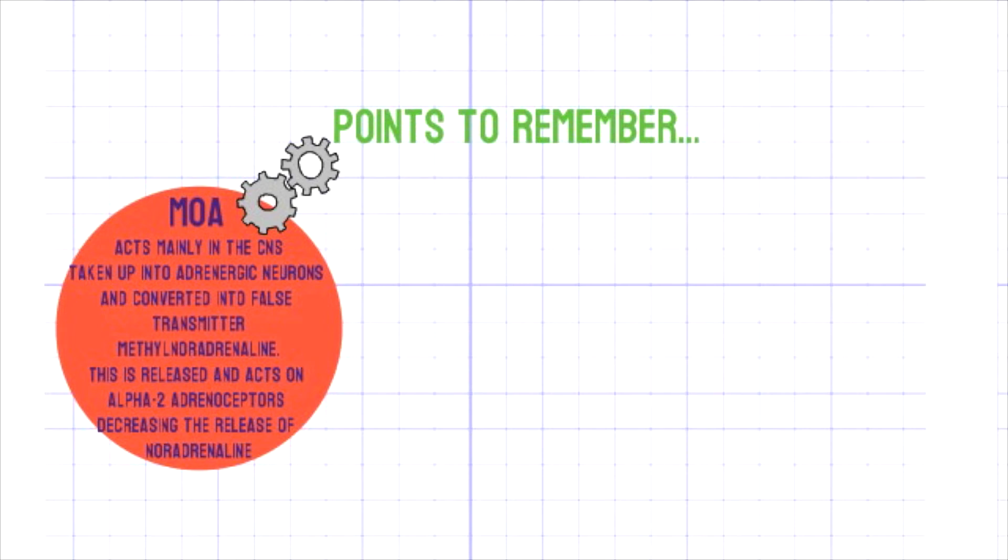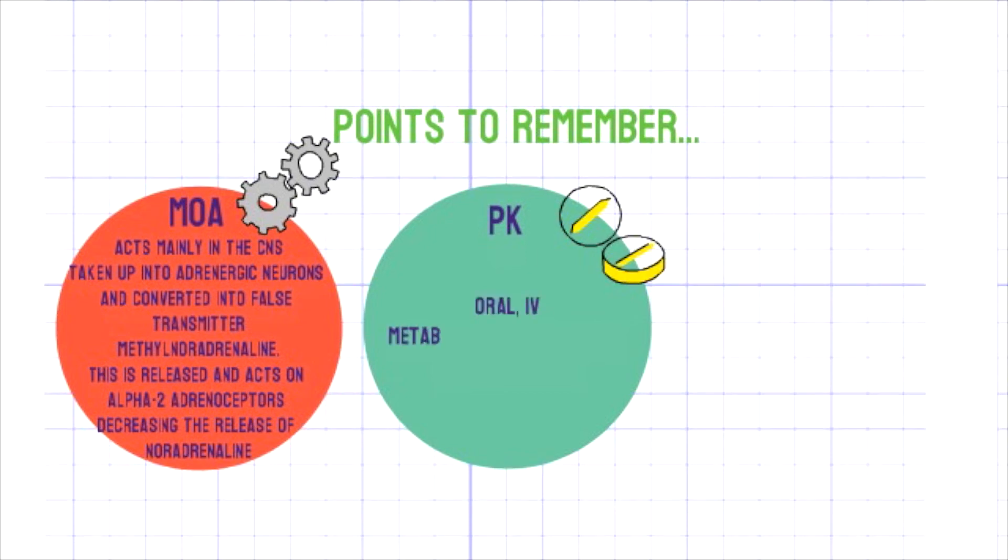Now the pharmacokinetics of methyldopa: methyldopa is given by oral or IV route. It is metabolized mainly in the liver and excreted in the urine.